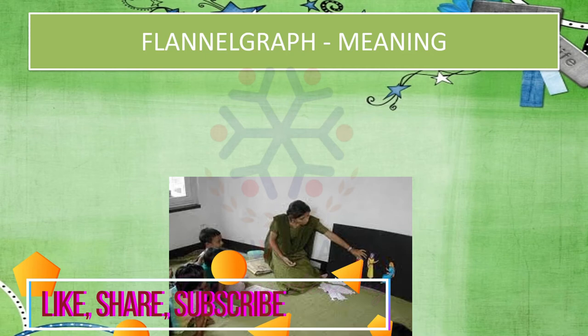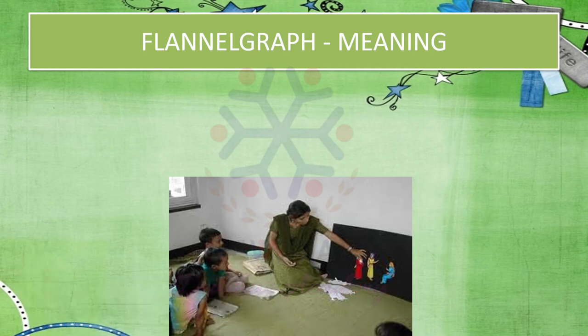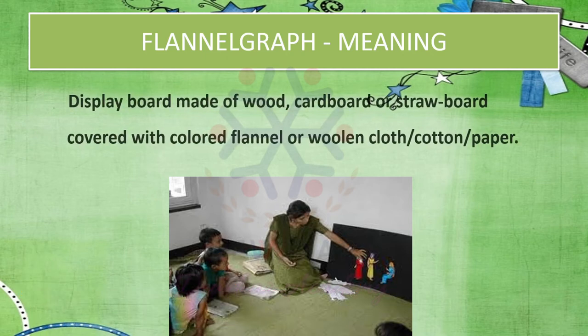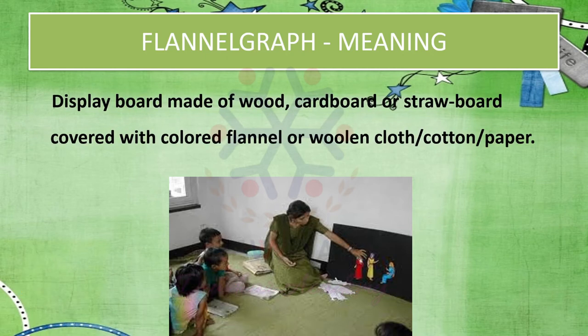First is the meaning of flannel graph. It is a display board which is made of wood, cardboard or straw board, covered with colored flannel or woolen cloth, cotton or paper.